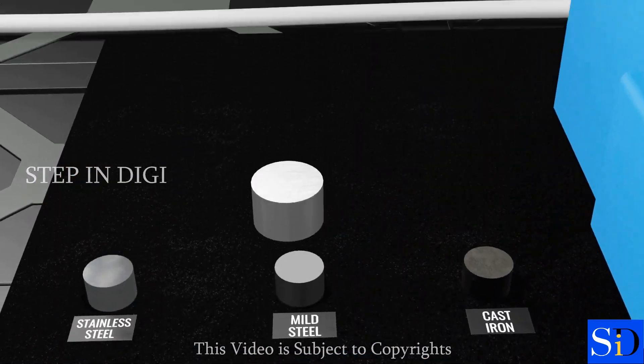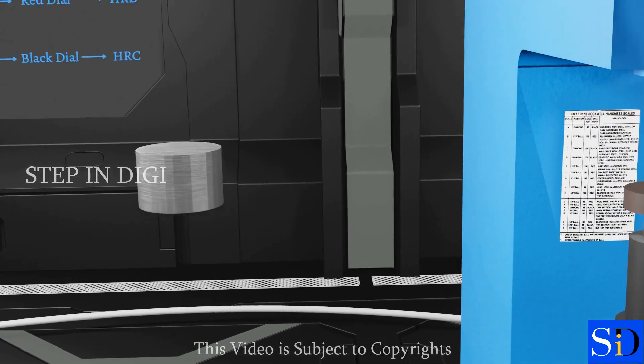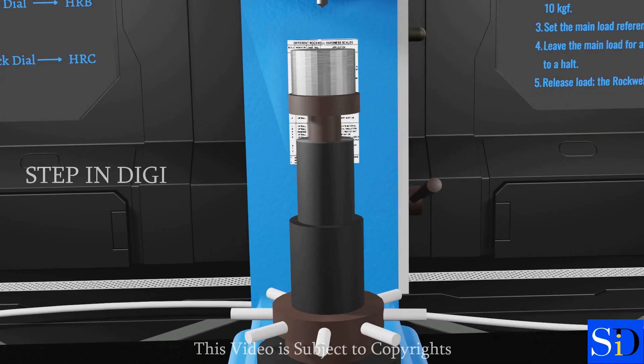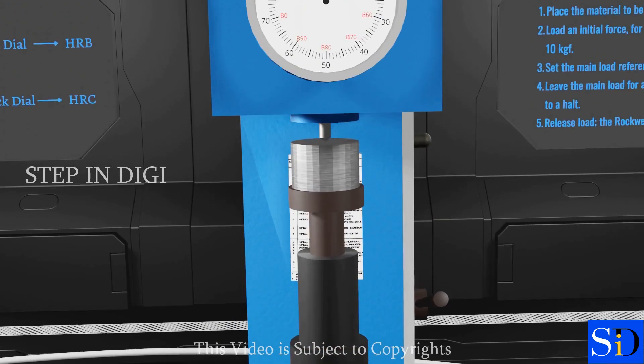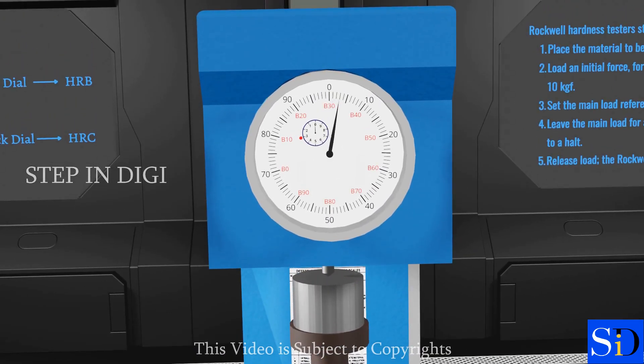So now, let us place the test piece on the supporting table. Now, rotate the hand wheel until the tip of the ball indenter touches the test piece. And the dial reaches B0 on the bigger needle, and 3 on the smaller needle, which means 10 kg of minor load is applied on the test piece.